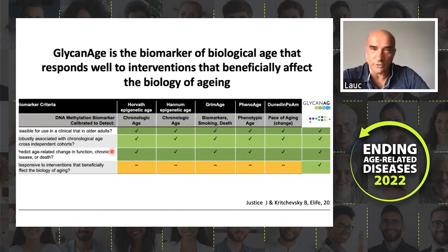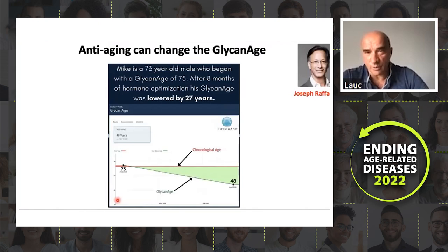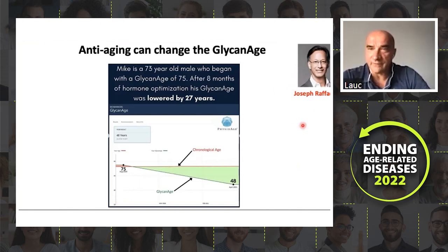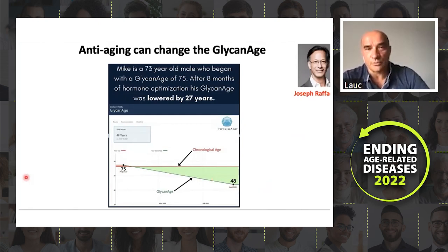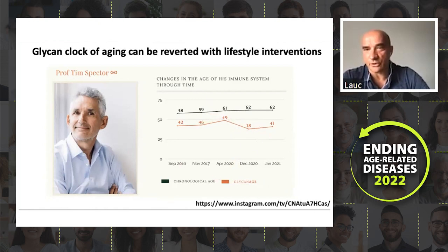If you do an intervention known to be beneficial for the biology of aging, glycans change. Since it is commercially available, we also have data from over 300 clinics selling the test globally. One of them is Joseph Raffaella in New York, and the majority of his patients after entering his treatments would become 10–20 years younger. We also have famous researchers like Tim Spector, who did an intervention and improved his glycan age by 11 years in a couple of months — we even recorded an Instagram live about it.